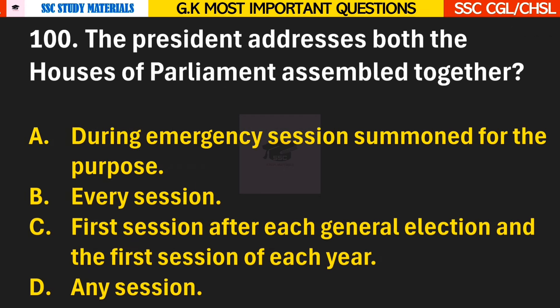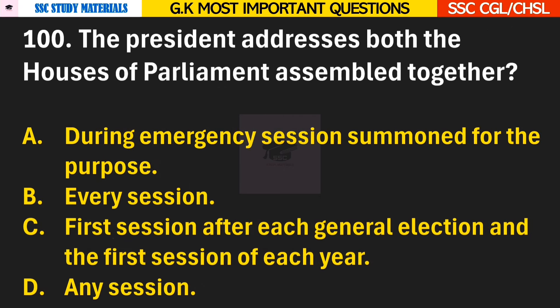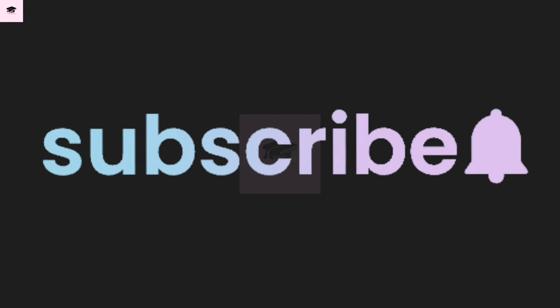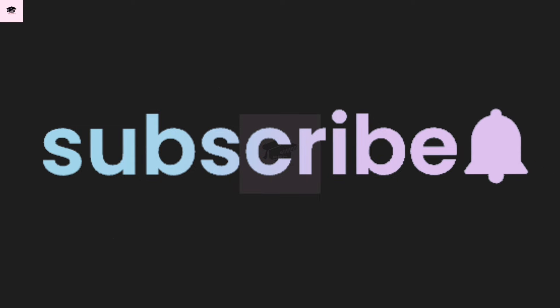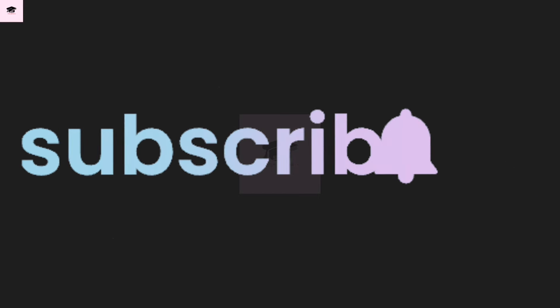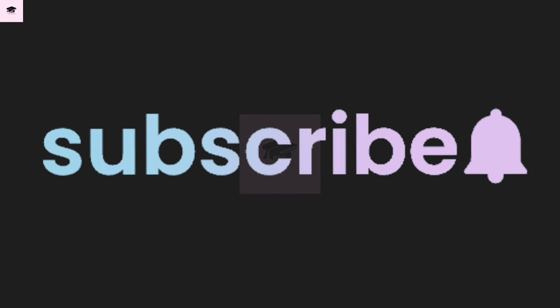Question 100: The President addresses both the houses of Parliament assembled together? Answer C — First session after each general election and the first session of each year. With this we came to an end. Thanks for watching till the end; I hope you liked the video. Do share this video with your friends and subscribe to my channel for more videos like this.